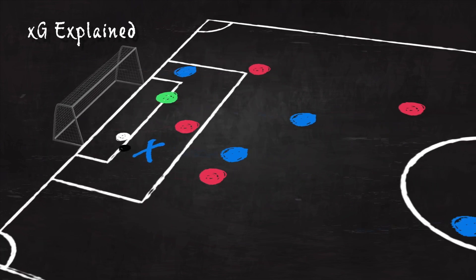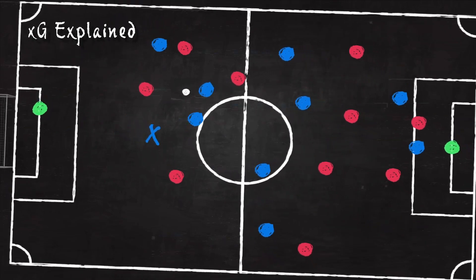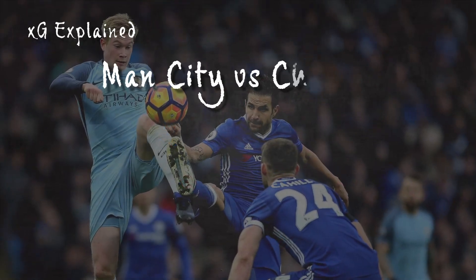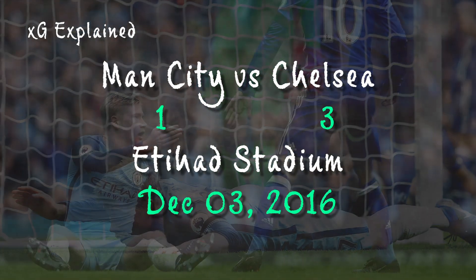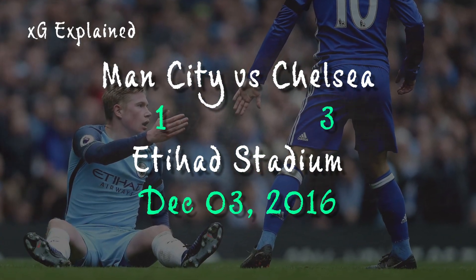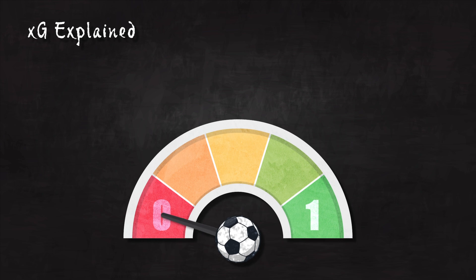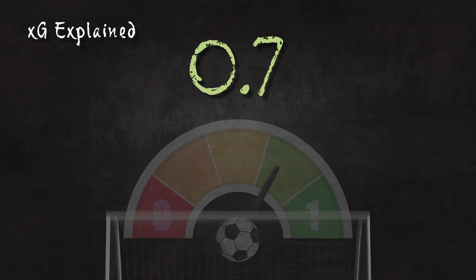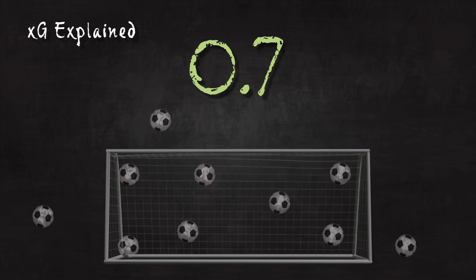Now let's go back to player X who did not score in front of an open goal. Does this remind you of something? It's actually a scenario that played out in a match between Manchester City and Chelsea, where Kevin De Bruyne missed this sitter. The XG for his chance was actually only 0.7, meaning 3 out of 10 times the chance would not result in a goal, and 7 times it would.